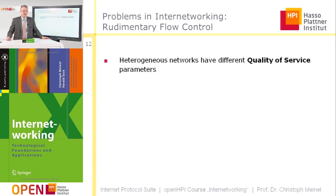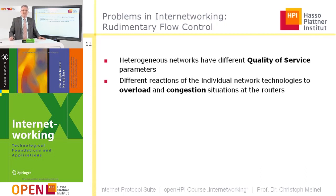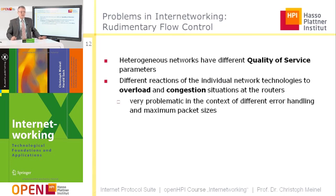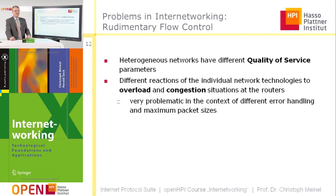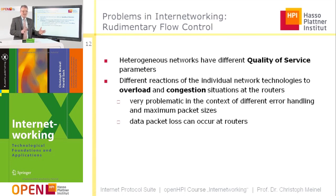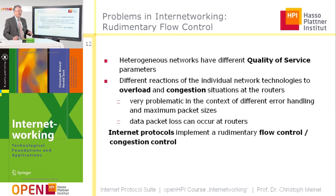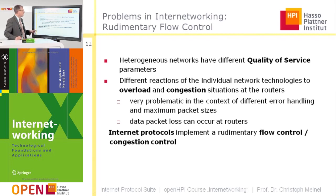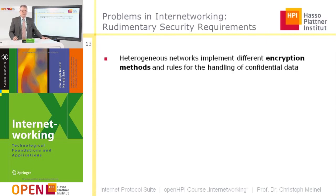The same is true for flow control. Heterogeneous networks have different quality of service parameters and react differently to overload or congestion situations in routers. Mapping these different error handling methods, different packet sizes, and different flow control mechanisms so that the internet protocol can translate one mechanism from one network to another is a very sophisticated and problematic task. Internet protocols therefore come with rudimentary flow control and congestion control mechanisms, which will be discussed further when examining specific internet protocols.